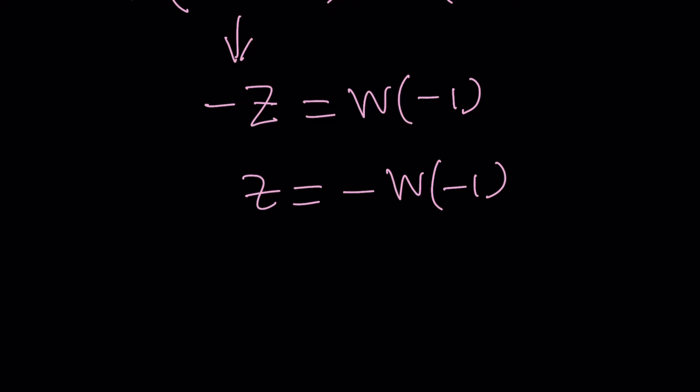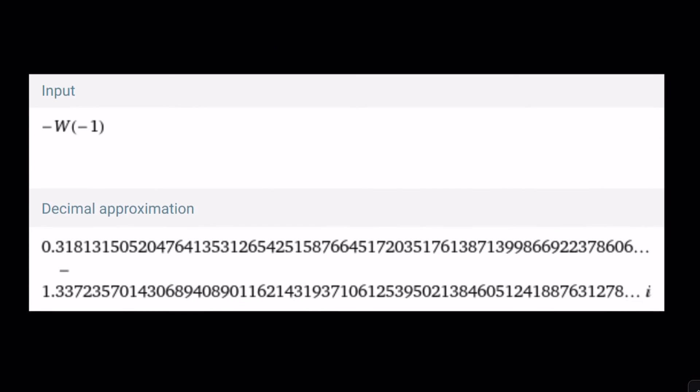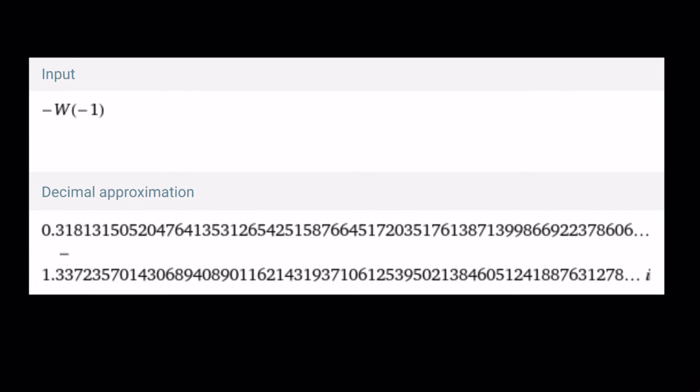So, that should be the answer, and this should be good enough. But let's go ahead and look at the numerical value of z that satisfies. Remember, at the beginning, we said z cannot be real. But wait a minute. We're talking about complex numbers here all the time. But guess what? Real numbers are also complex, because they are a subset. Anyway, so, what does Wolfram Alpha say? Well, Wolfram Alpha gives us the decimal approximation, which is 0.318318150, you get the idea, dot dot dot, minus 1.33, so on and so forth, i.